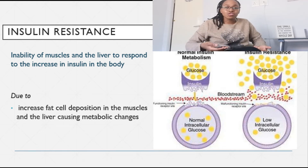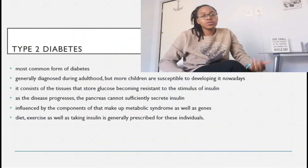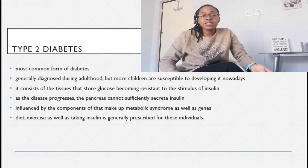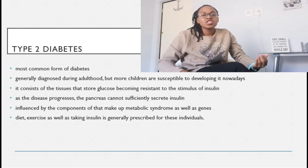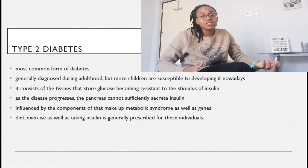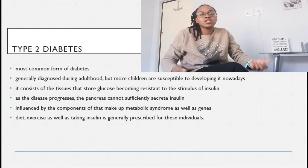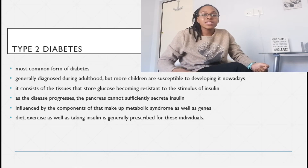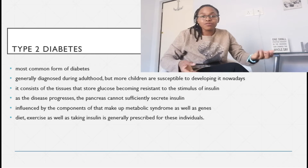This causes more glucose to stay in the bloodstream whenever you ingest it after insulin resistance takes place. That increase in glucose over a long period of time gets out of control and leads to the development of type 2 diabetes. Type 2 diabetes is the most common type and affects mainly adults, but due to different lifestyle changes, more and more children are also susceptible. You have enough insulin, but your liver and muscles are resistant to its stimulus, leading to too much glucose in the blood. Over time, the pancreas also stops making insulin effectively.